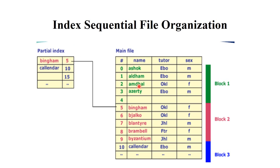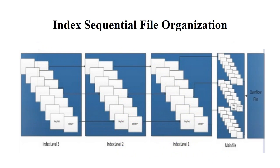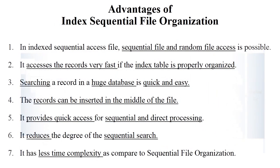From that particular index you can access the complete record of that particular student document. This is the concept of index sequential file organization. Looking at the structure: here is the main file where many types of files are stored. Each and every file has a particular index or primary key, so you move from that index to the particular file. Multiple files are stored with multiple indexes, and from that particular index you move to that particular file.